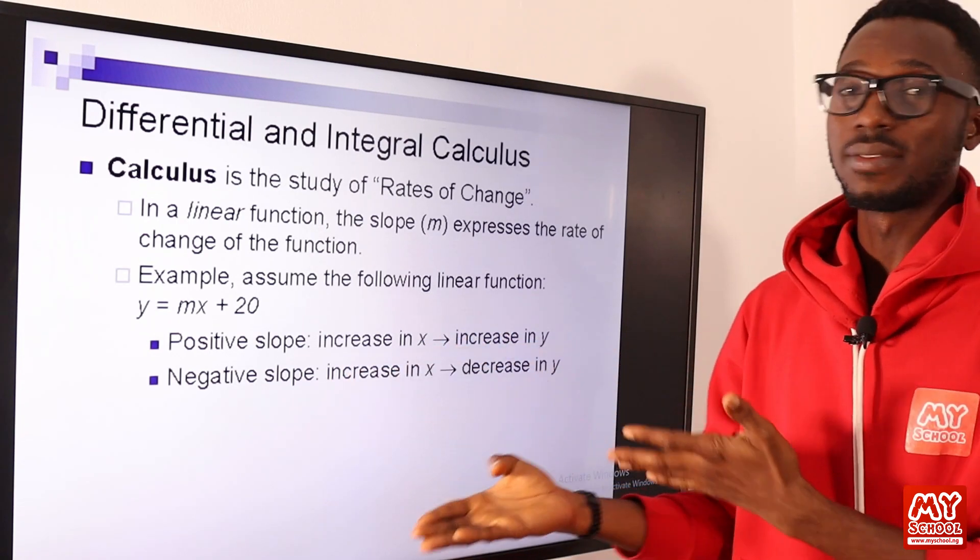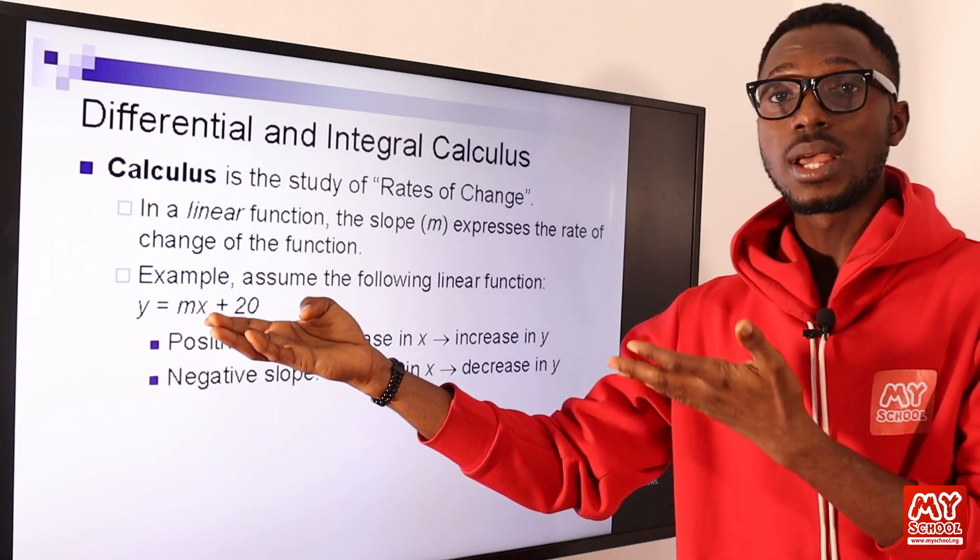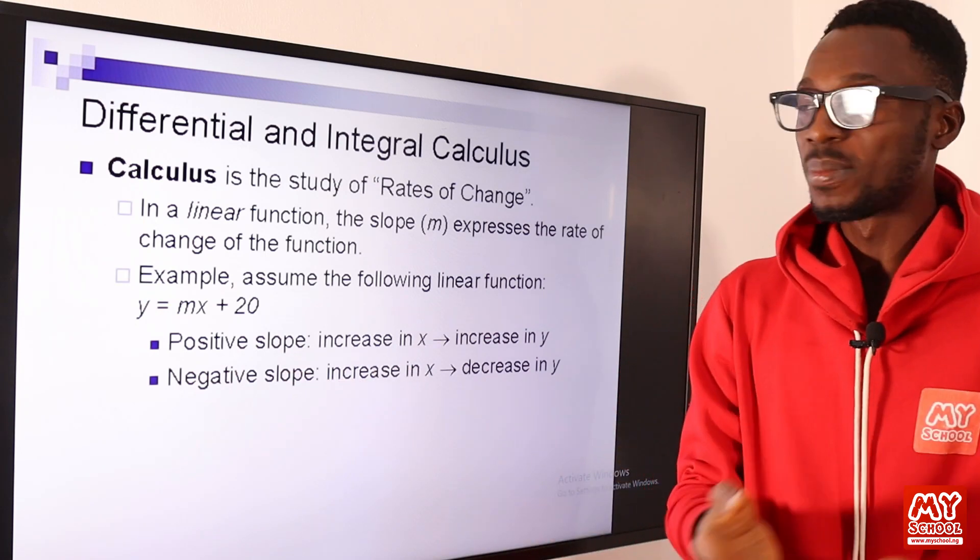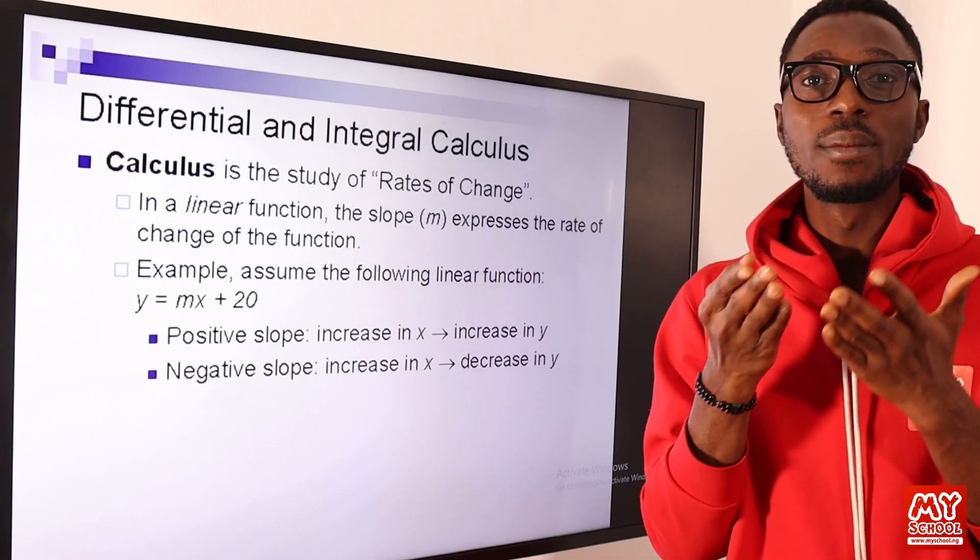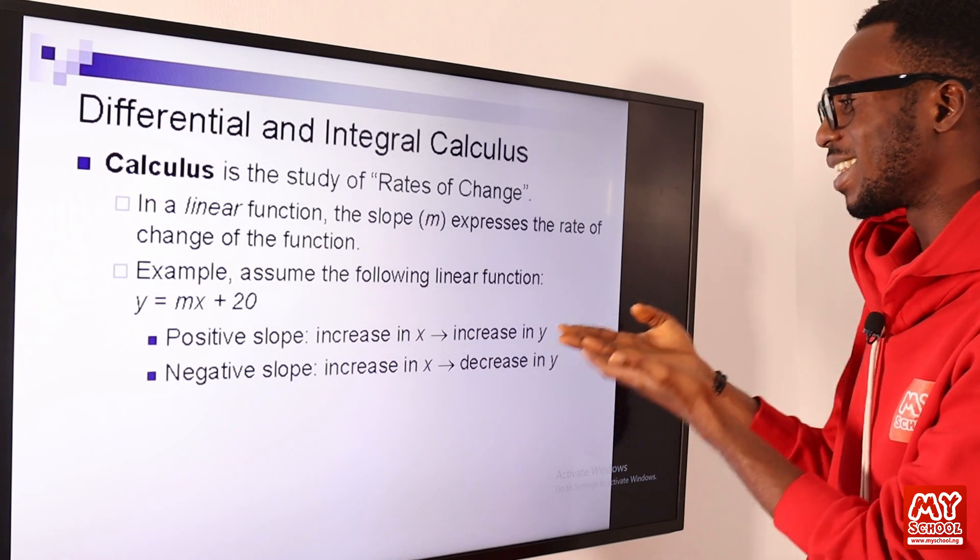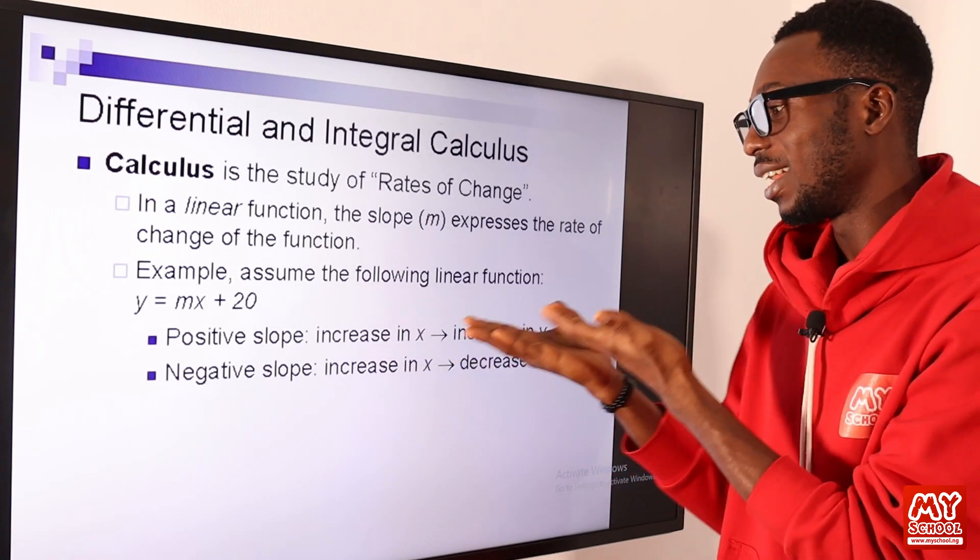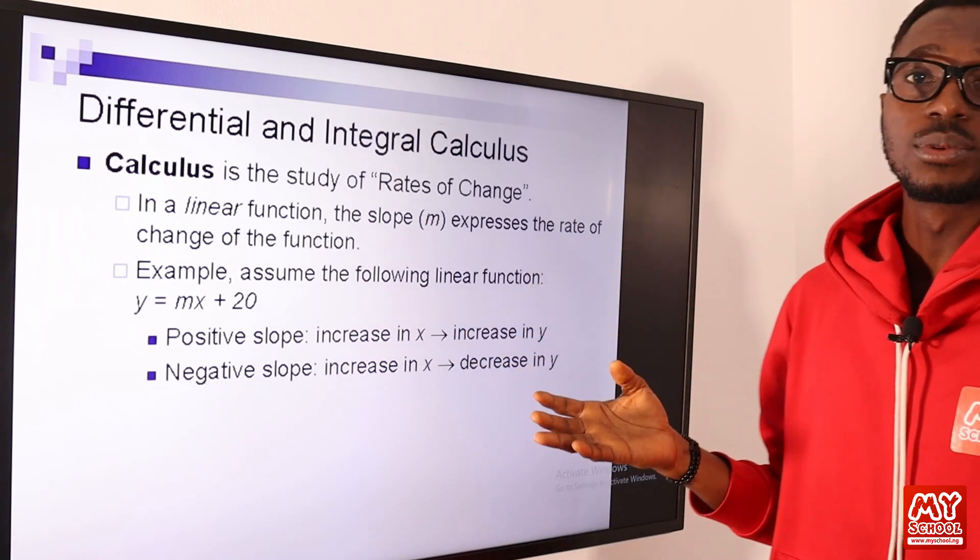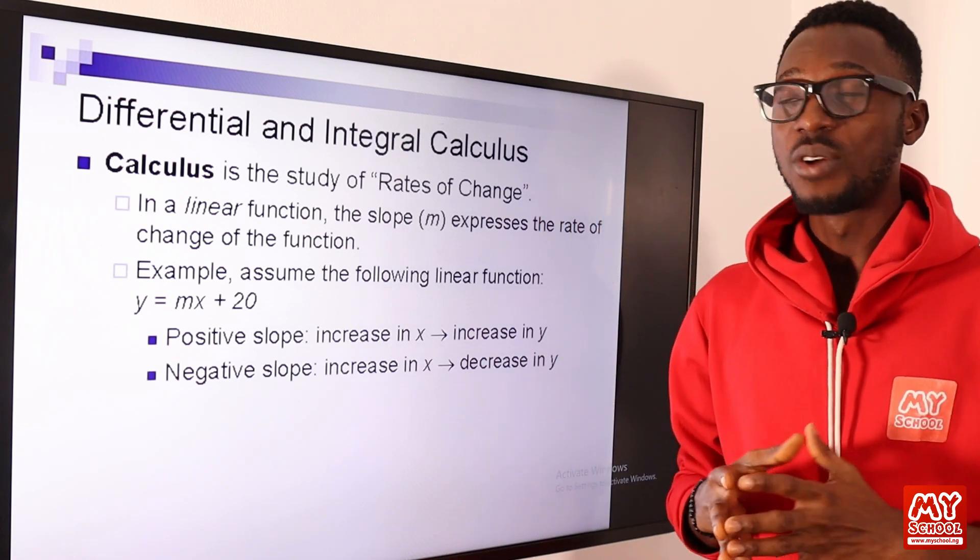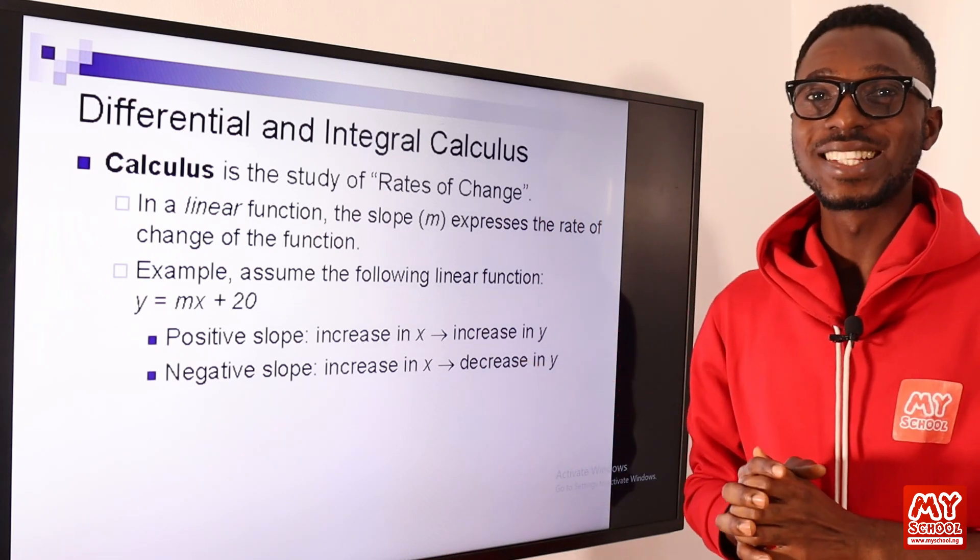If the slope is negative, let's say minus 2 now, minus 2 times 3 gives us minus 6 plus 20, that is plus 14. So we can see that there's a decrease in Y as there's an increase in X. This is just one introductory aspect regarding calculus.